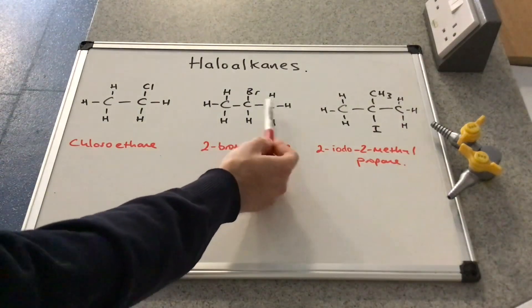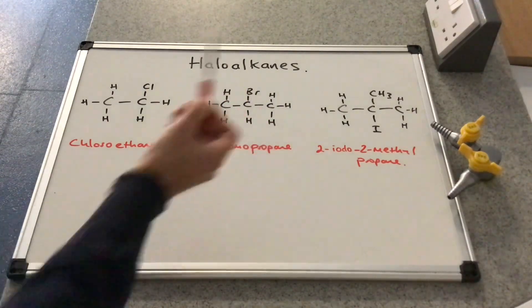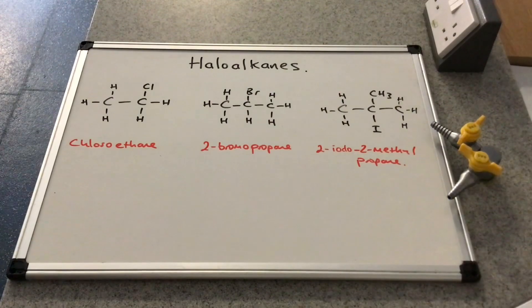Middle one now, so obviously that's propane, and we've got a bromine on carbon number two, so that's called 2-bromopropane.